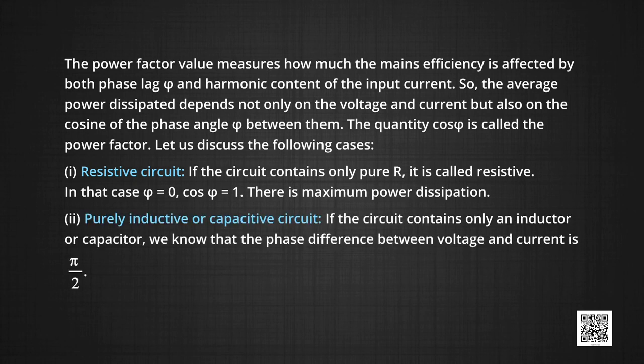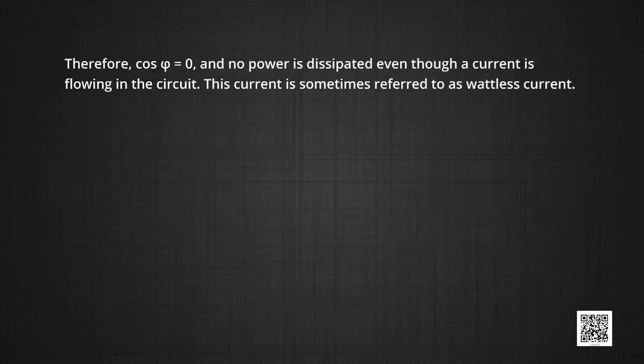Case 2: purely inductive or capacitive circuit. If the circuit contains only an inductor or capacitor, the phase difference between voltage and current is π/2. Therefore, cos φ = 0 — there is no power dissipation. Even though current is flowing in the circuit, this current is sometimes referred to as wattless current.